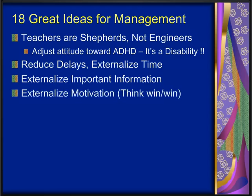Another principle is to make motivation physical and external. ADHD interferes with executive functioning, and one of the many executive functions is self-motivation — the ability to motivate yourself in the absence of external consequences. Children with ADHD cannot do this very well, and when put in situations without immediate consequences, they are unable to muster the self-motivation and persistence to finish the task. They will usually spend just a few minutes on the task before skipping off to do something more interesting. You need to make consequences physical and external, and you must make it a win-win for the child — performing the work is a win for the teacher, not for the child, so you need to make sure the child gets a reward for performing the work.